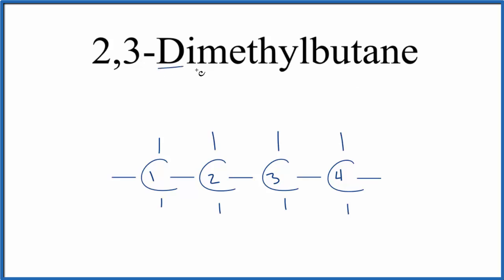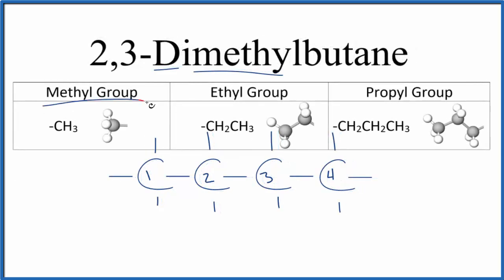Dimethyl means we're going to have two methyl groups, and they're going to be on the second and third carbon. The methyl group is just CH3. So on the second carbon and on the third carbon, we're going to replace one of the hydrogens with this CH3 group, like this.